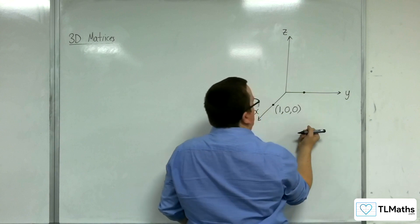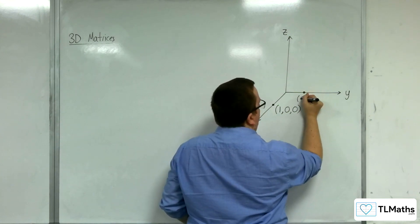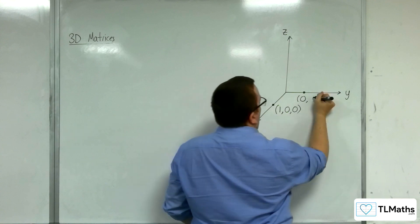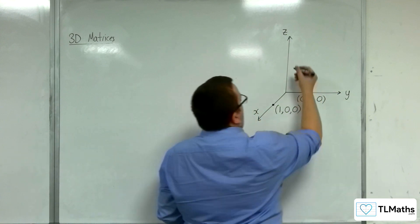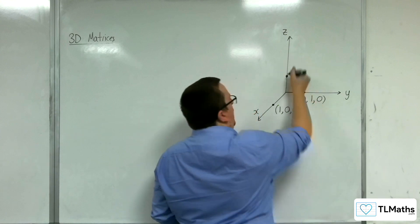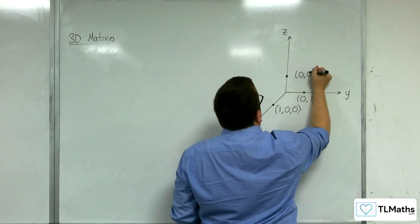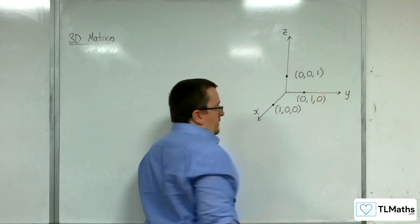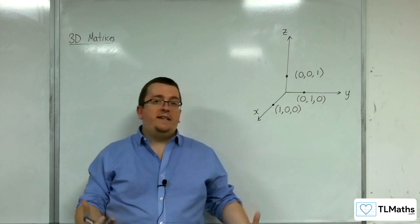Likewise, this point here, which could be one along the y-axis, would have the coordinates zero along the x, one in the y, zero in the z. And this point here, which is one up, would be referred to as zero in the x, zero in the y, one in the z. And so you can have these 3D coordinates.